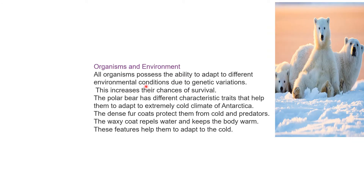Now let's see the relation between the organism and environment. All organisms possess the ability to adapt to different environmental conditions due to genetic variations, which increases the chances of survival. If they adapt to the surroundings they will survive; if they don't adapt, they will get extinct. For example, the polar bear has different characteristic traits that help them adapt to the extremely cold climate of Antarctica.